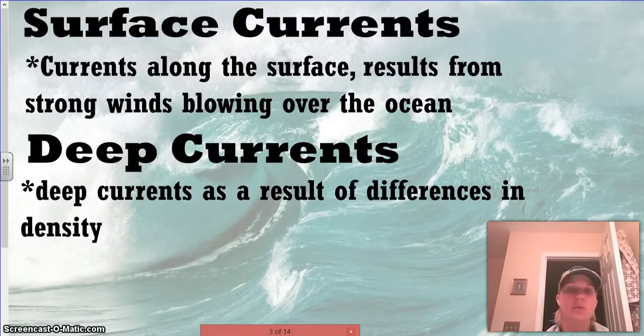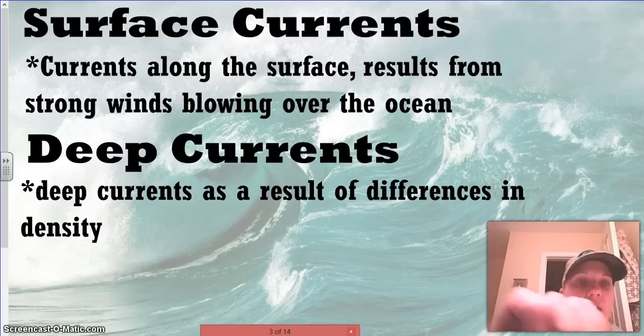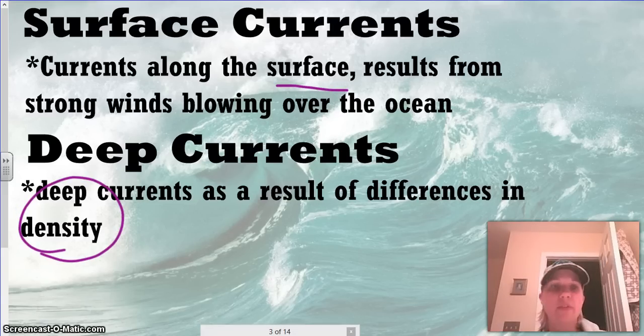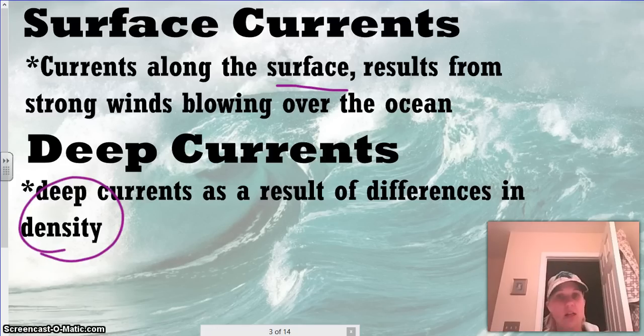Surface currents and deep currents, so now we're taking the word current and dividing it up. The surface currents are going to be along the surface. The deep currents are going to be as a result of density. When we think of cold water or cold air, it's going to sink. Warm air or warm water is going to rise.